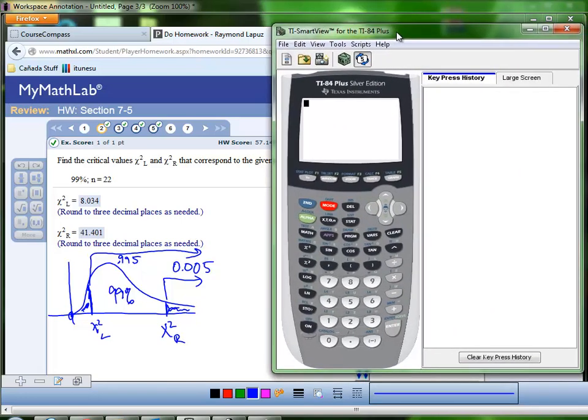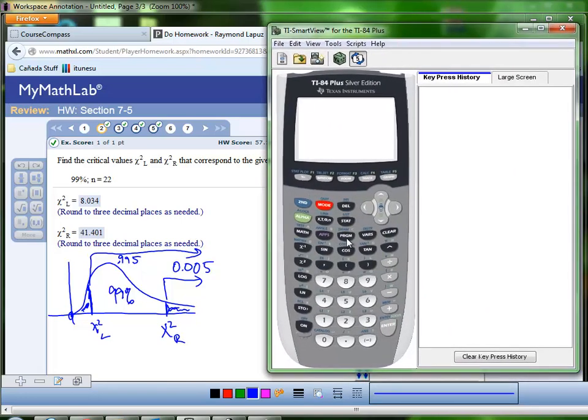So let's take our calculators out and hit program. And our choice is going to be the inverse chi-square. That's to find the critical values. So you can arrow down to that or you can just press 2. Enter. Enter. They want the degrees of freedom. With a sample size of 22, our degrees of freedom is 21. Enter.